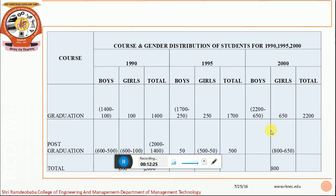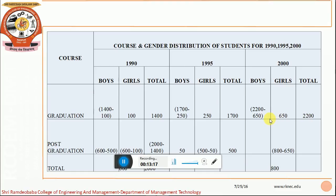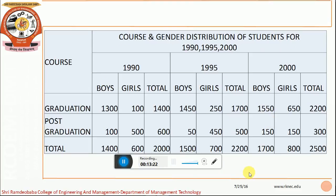Once we have filled in the required data, the next step is identification of the missing values. In 1990, total graduate students are 1400 and girls are 100, so the remaining boys are 1400 minus 100. Total students are 2000, graduation is 1400, so post-graduation is 2000 minus 1400. There are 600 girls total; 100 girls are in graduation, so 600 minus 100 are in post-graduation. By these calculations, we fill up all the missing data not present in the paragraph and complete the tabular data, making it easier for better interpretation and analysis.